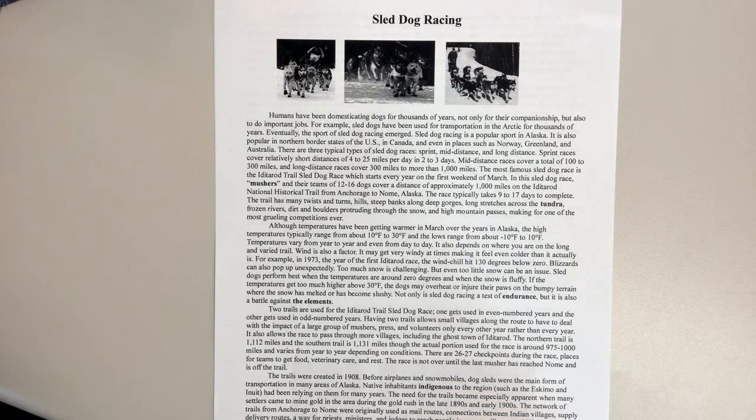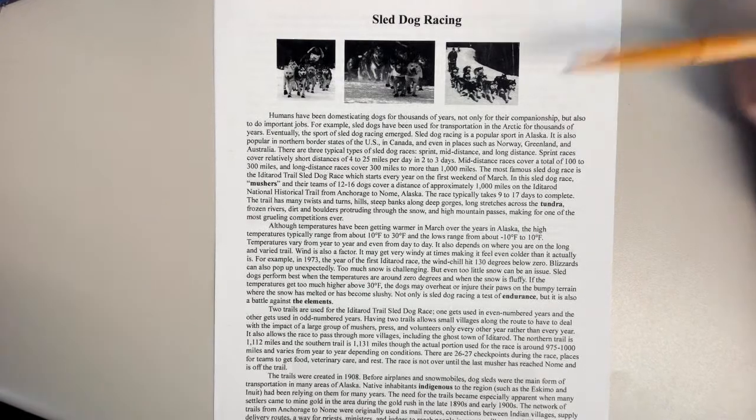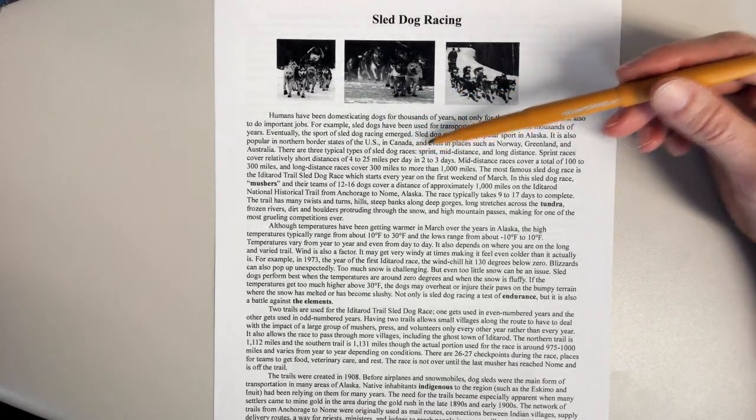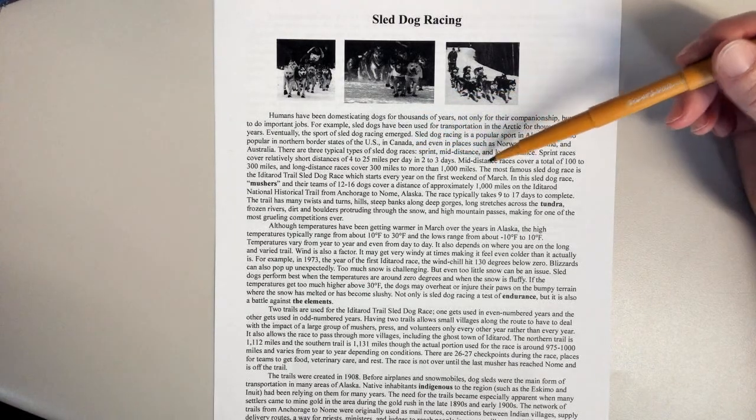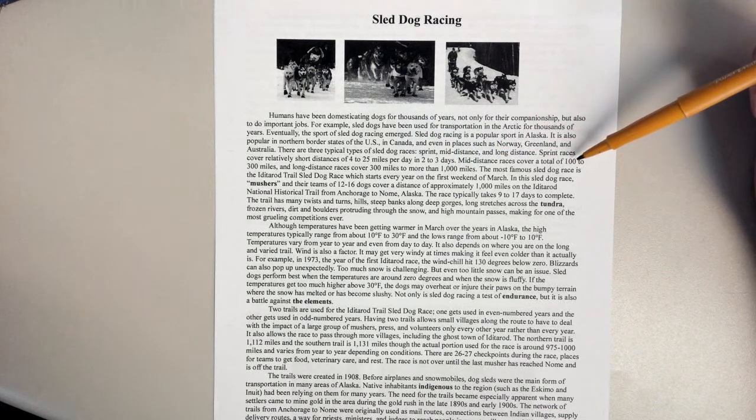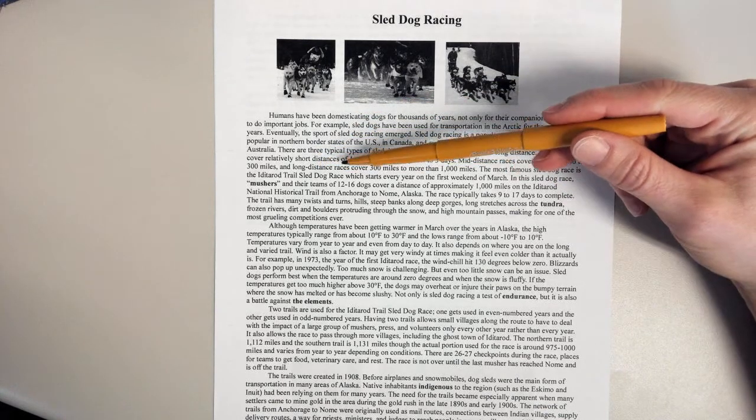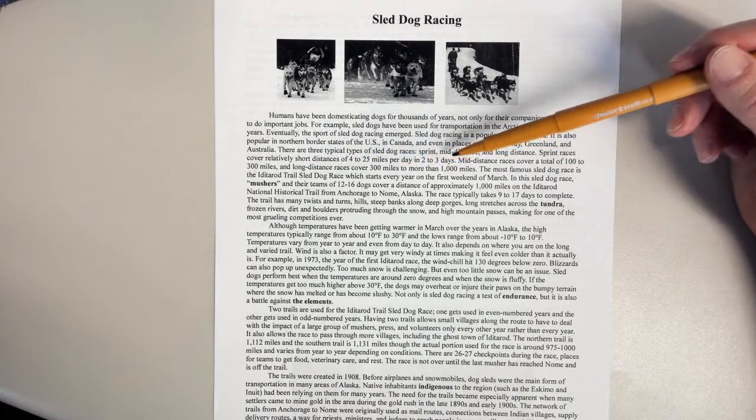It is also popular in northern border states of the U.S., in Canada, and even in places such as Norway, Greenland, and Australia. There are three typical types of sled dog races: sprint, mid-distance, and long distance. Sprint races cover relatively short distances of 4 to 25 miles per day in two to three days. Mid-distance races cover a total of 100 to 300 miles, and long distance races cover 300 miles to more than 1,000 miles.